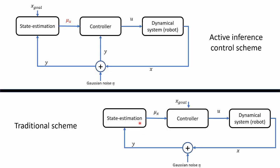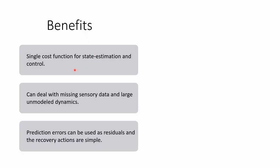And that's, again, because of this biased state estimate, like this top left corner, this mu of x that I marked in red. So the benefits of the Active Inference controller are we have a single cost function for state estimation and control. And that can allow us to deal with missing sensory data easily and also large model dynamics as previous work has shown. The prediction errors can also be directly used as residuals, so we don't need additional supervision on the system. And the recovery action is fairly simple as well. So this simplifies the whole filter control process.